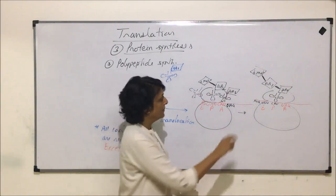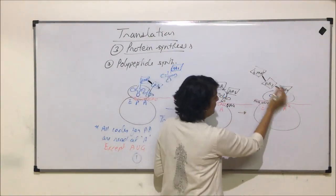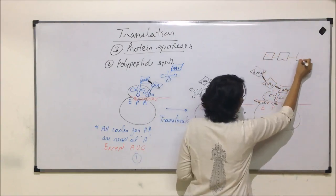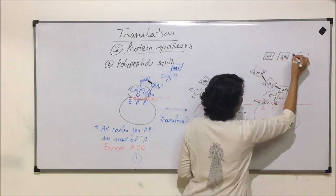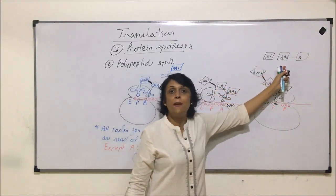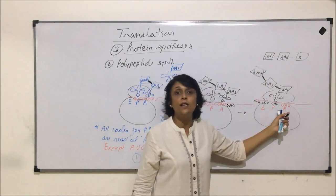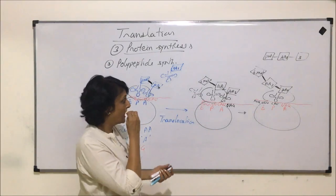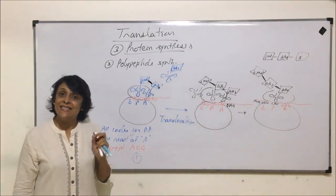After this, when this ribosome slides further, this chain of amino acids, which had F-MET, amino acid 2, amino acid 3 and so on, this is our polypeptide chain which is synthesized. And it will be terminated as soon as there is a stop codon which comes here. So this is how the polypeptide is synthesized.